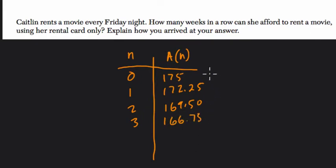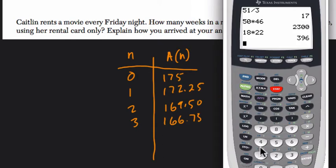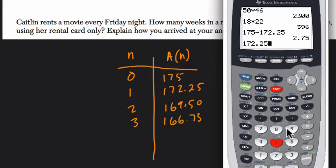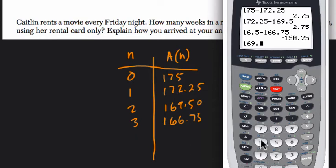Alright, so let's see if this thing is linear. Let's see if the price of a movie is constant. And we're just going to find our differences there. So what is $175 minus $172.25? It's about $2.75. And then $172.25 minus $169.50, that's also $2.75. And then lastly, $169.50 minus $166.75.